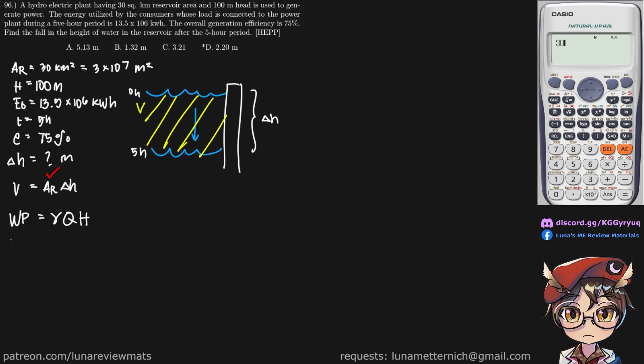And we also know that the energy output is simply water power times the efficiency times the period. So it looks like we have our energy output, we have our head, we know what this is, we know the efficiency and we know the period. So if we single this out, we should be able to find our volumetric flow rate.